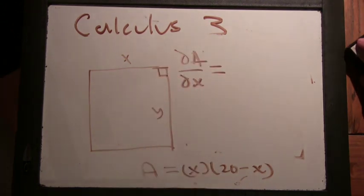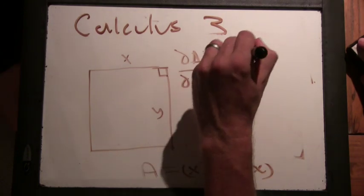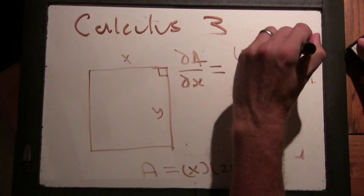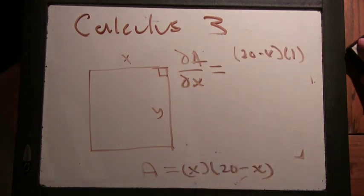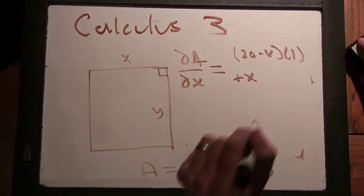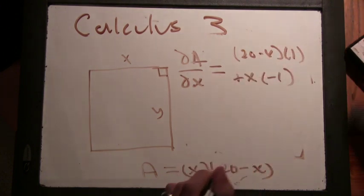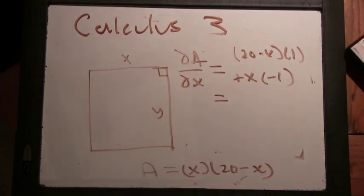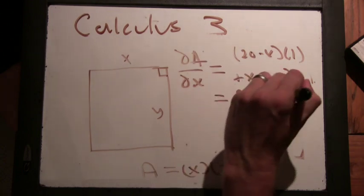dA dx is? We can do the product rule, I suppose. Okay. So it's going to be 20 minus x times 1, plus x times minus 1. Alright. And that simplifies to be what? It's 20 minus 2x. 20 minus 2x.